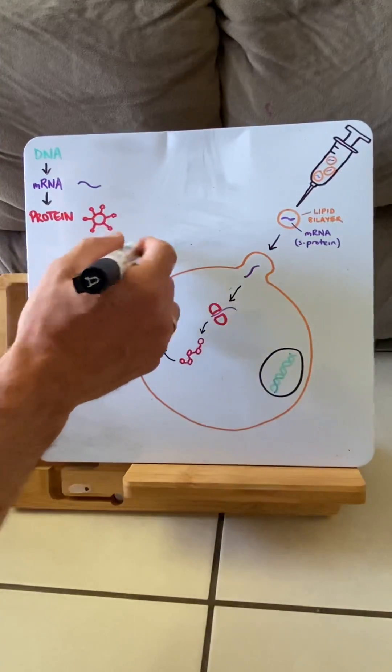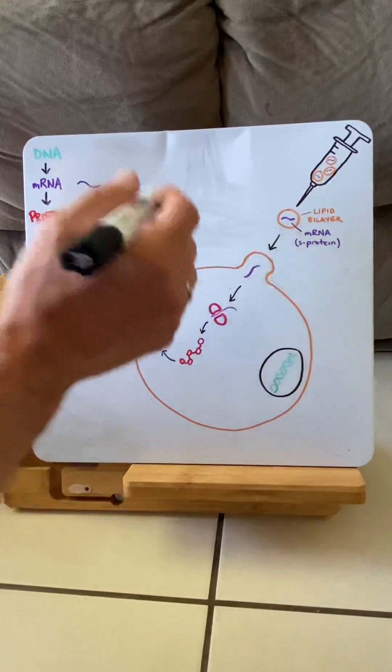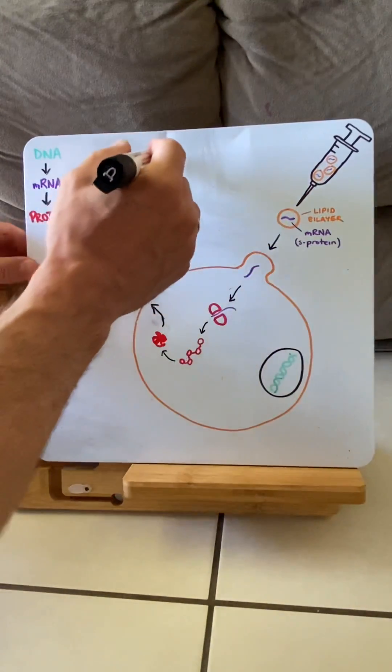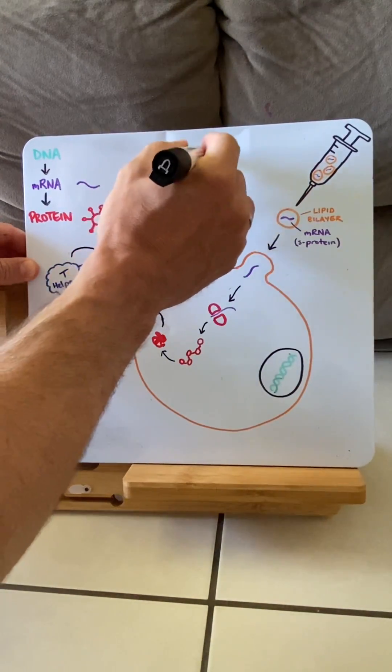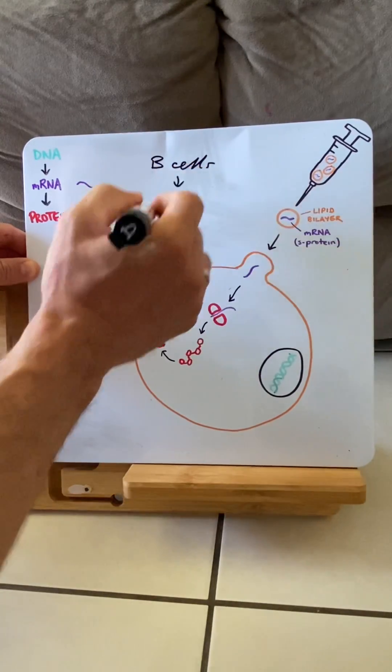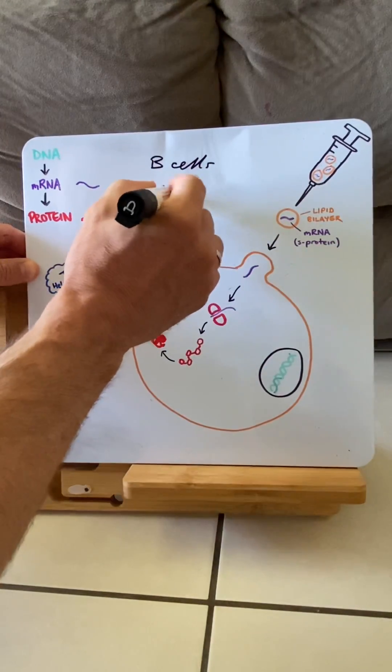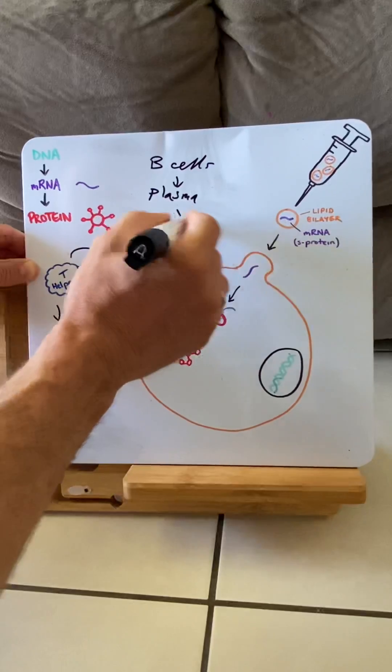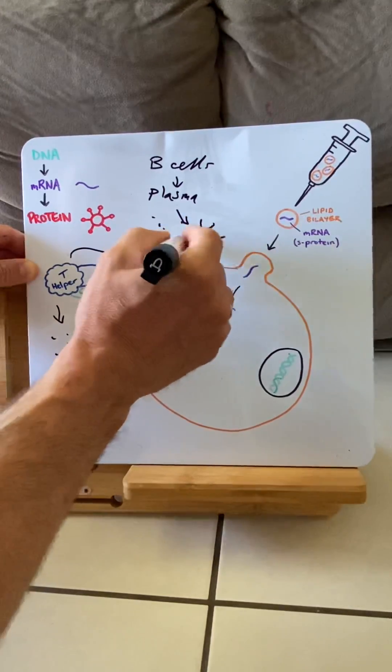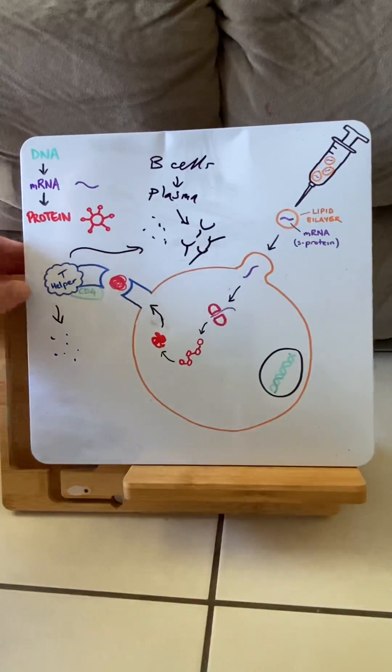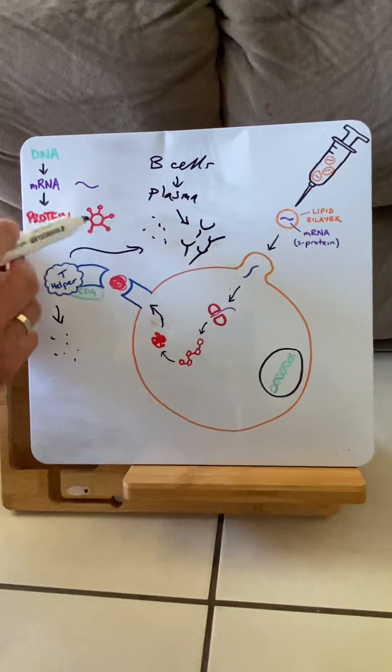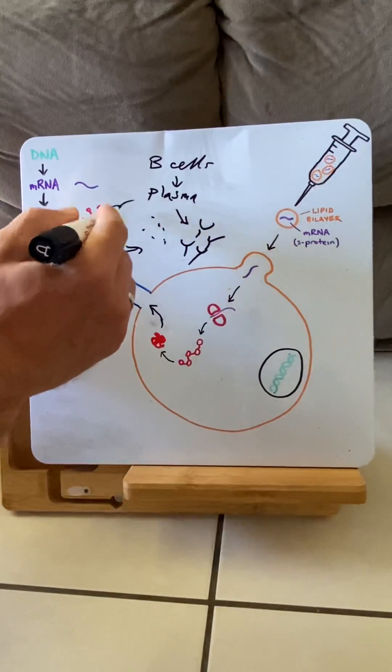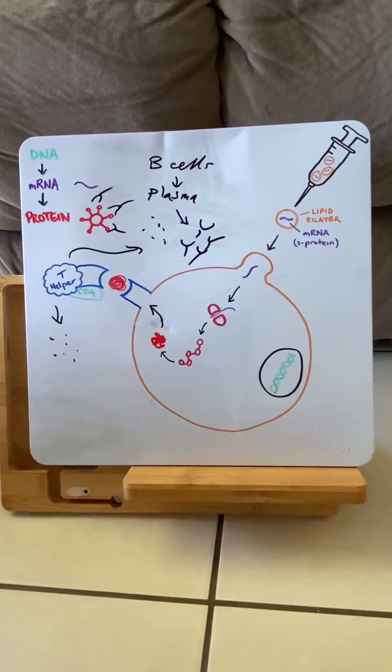Now, cytokines are messenger molecules, and cytokines do some important stuff. Firstly, they call in B cells. B cells can then differentiate into plasma cells, and plasma cells produce antibodies. And what antibodies can do is they have a memory. So if we ever get invaded by SARS-CoV-2, they recognize it straight away and surround it, agglutinate it, and stop it from doing any damage.